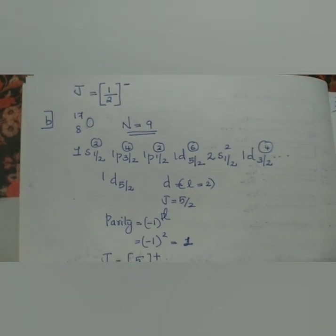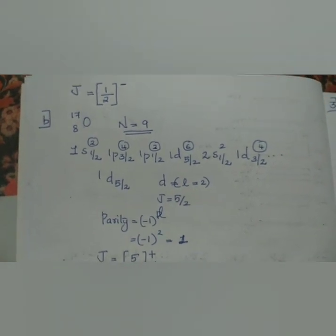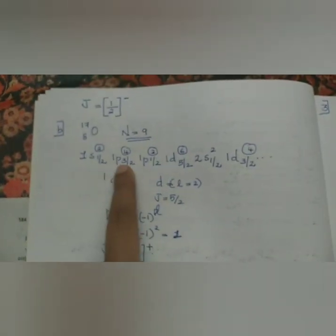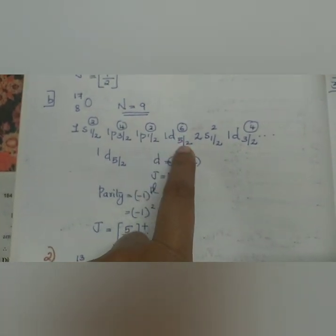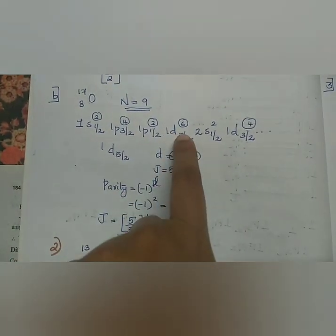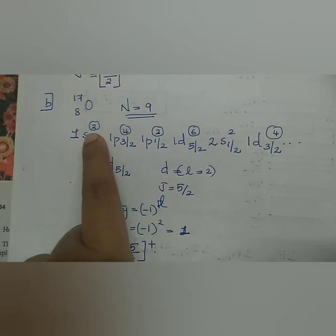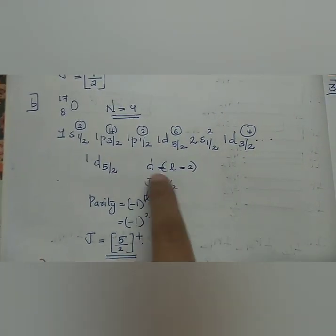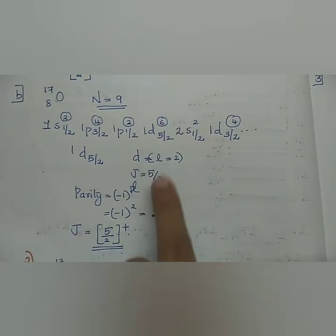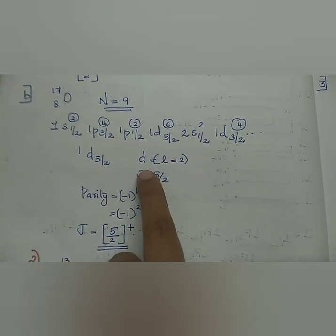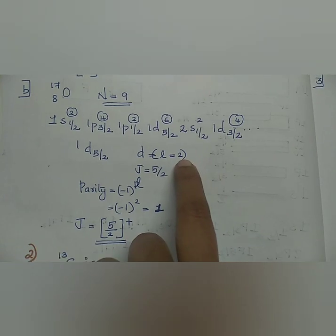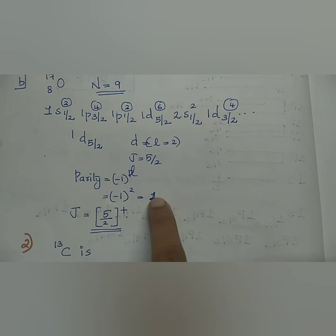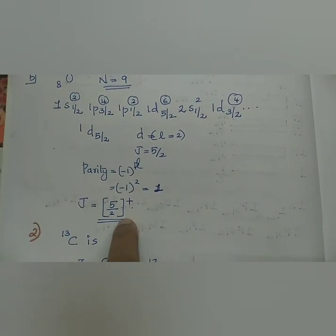Next, Oxygen-8-17. Proton number is 8, neutron number is 9. The distribution is 2, 4, 2, and 1 unpaired in d5/2. Using 2j plus 1, we get j equals 5/2. Parity is minus 1 raised to l. L value is 2 corresponding to d shell. So minus 1 squared is plus 1 which is positive. J value is 5/2 plus.